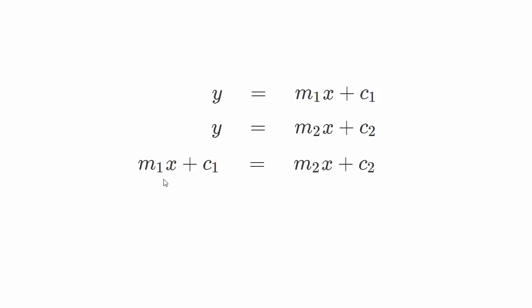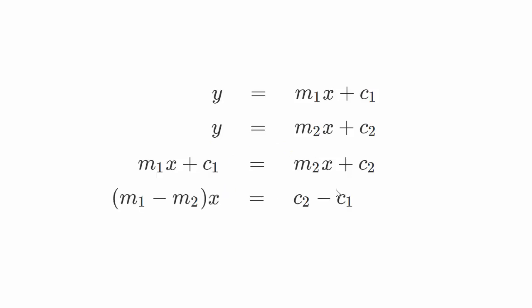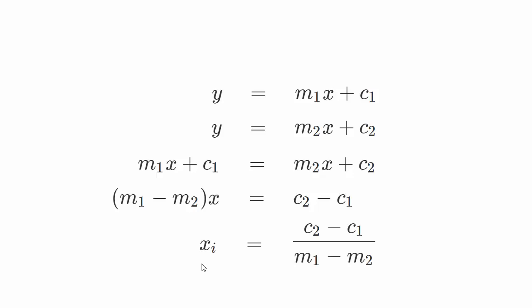Both equations are equal to Y, so we can say that M1·X plus C1 equals M2·X plus C2. Moving terms across, I can write M1 minus M2 times X equals C2 minus C1. Now I'm going to divide both sides by (M1 minus M2).